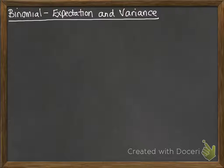All right, expectation and variance for a binomial distribution. So we have X following a binomial distribution with n trials, and the probability of success is p.